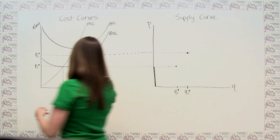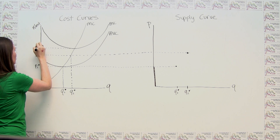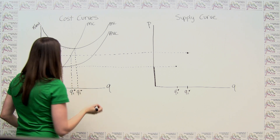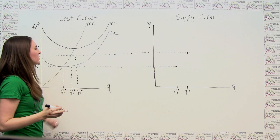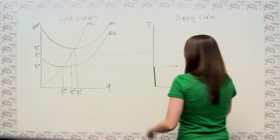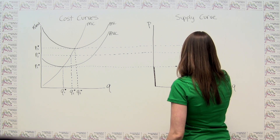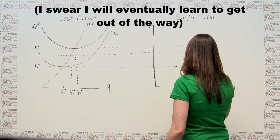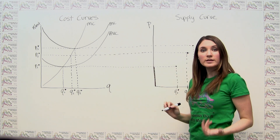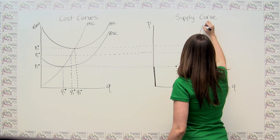We can do another one. Now we're at the bottom of our average total cost curve — call this P3 star. Price equals marginal cost at Q3 star. Superimposing this on our supply curve, at this price we're producing quantity Q3 star. We can keep doing this for every possible price, and what you would see is that we're tracing out a supply curve that looks something like this.